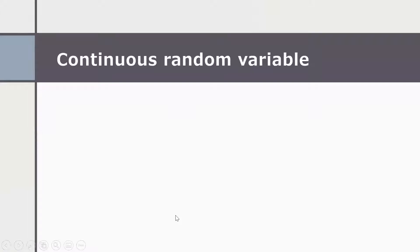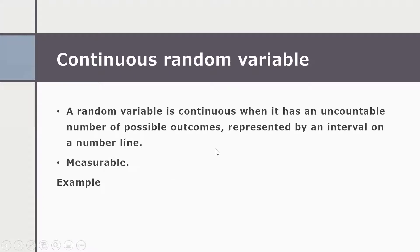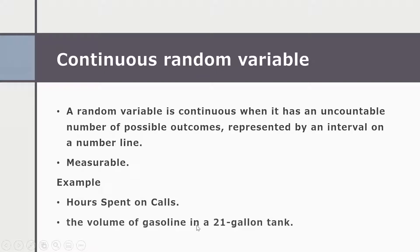A random variable is continuous when it has an uncountable number of possible outcomes represented by an interval on a number line. These are the measurable quantities. Examples of continuous random variables include hours spent on courses and the volume of gasoline in a 21-gallon tank.